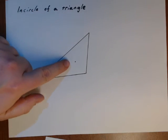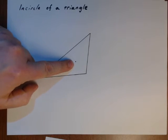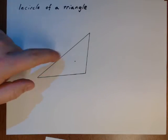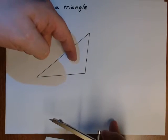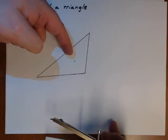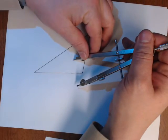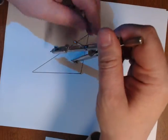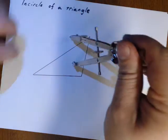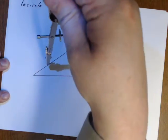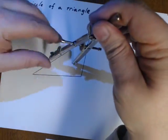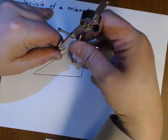Now, from this point, which is called the incenter, we need to find a radius to any of these sides. So, this is the construction that we've used before for finding the perpendicular to a point not on the line.